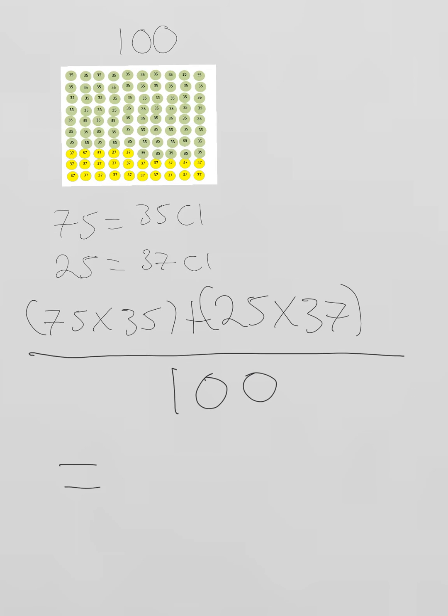And so your final answer should be 35.5, which is the relative atomic mass of chlorine.